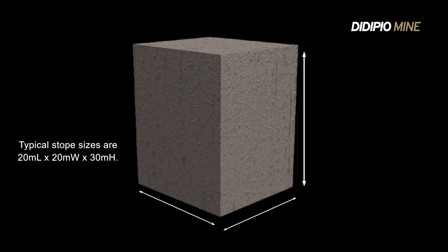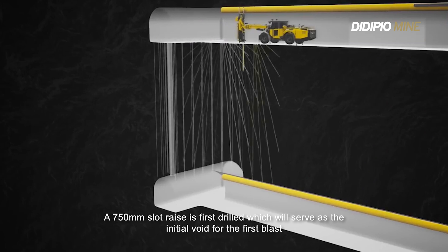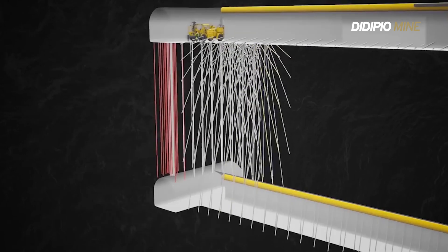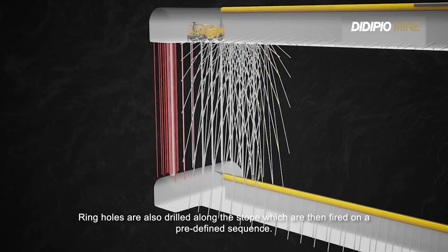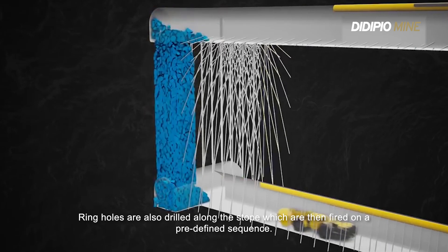Typical stope sizes are 20m x 20m x 30m. The 750mm slot raise is first drilled, which will serve as the initial void for the first blast. Ring holes are also drilled along the stope, which are then fired on a predefined sequence.